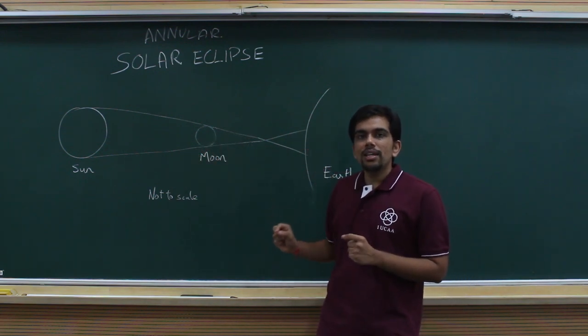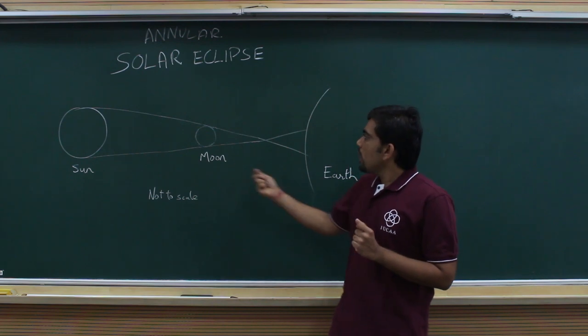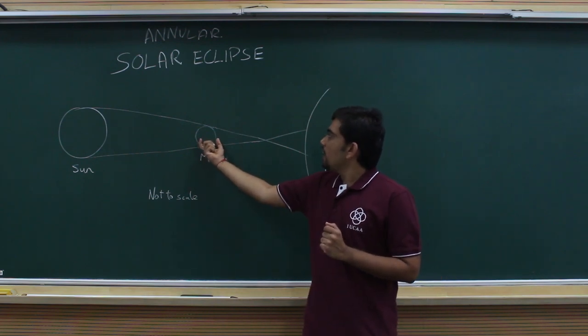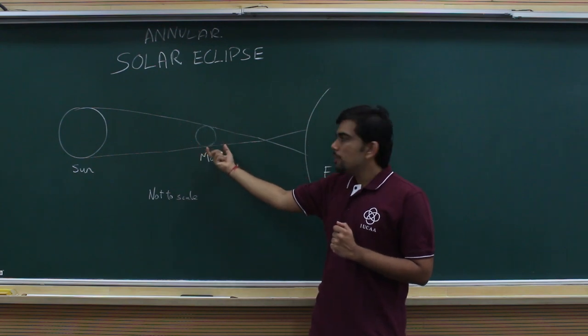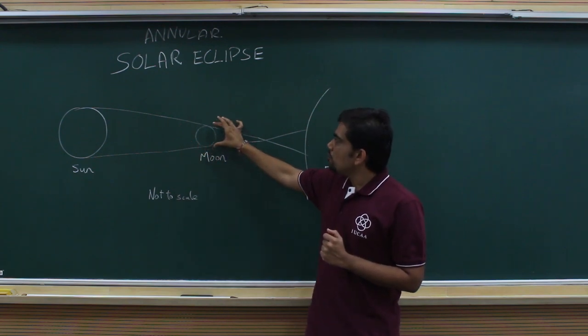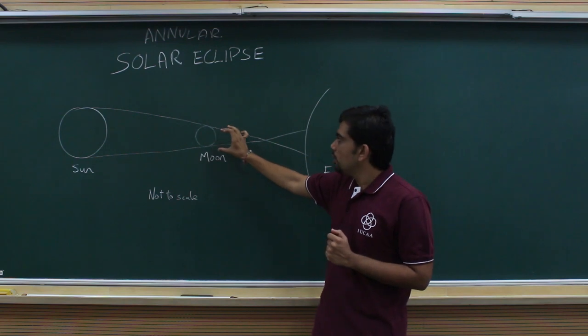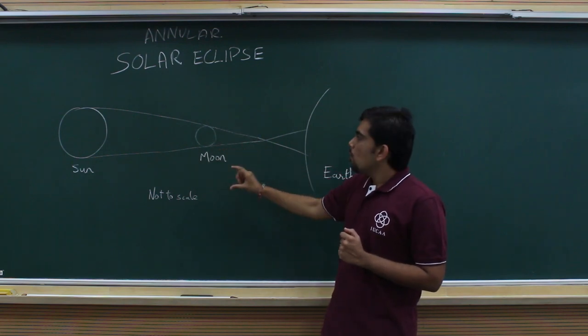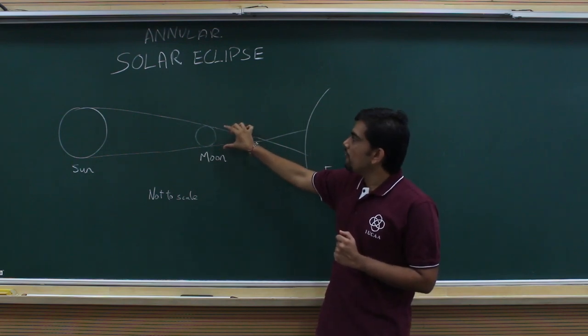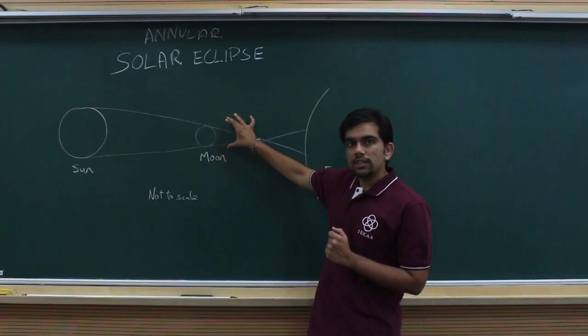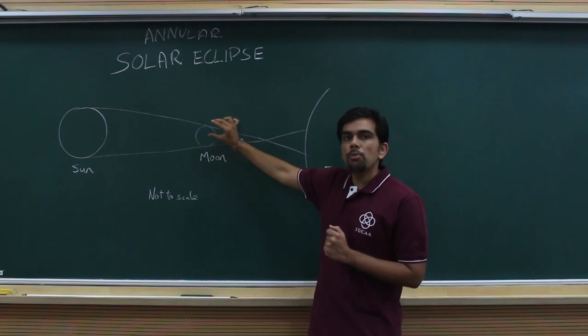Now, the orbit of the moon is a bit elliptical, so the moon moves slightly either towards or away from the Earth. When that happens, the relative size of the moon becomes larger or smaller, and as a result, you might have either a full blocking of the Sun or a smaller blocking of the Sun.